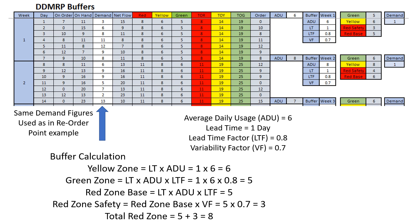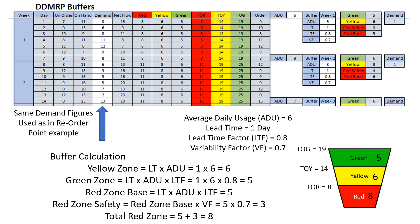The buffer calculation is as follows. The yellow zone is the lead time multiplied by the average daily usage, giving us 6. The green zone is the yellow zone times the lead time factor of 0.8, which equals 5 rounded up. The red zone base is the same as the green zone at 5, and the red zone safety is the red zone multiplied by the variability factor of 0.7, giving us about 3. So the total red zone is 8. In the buffer, the top of red will be 8, the top of yellow will be 14, and the top of green will be 19.